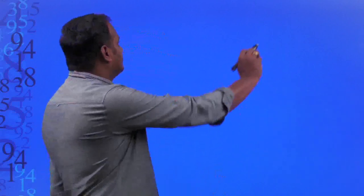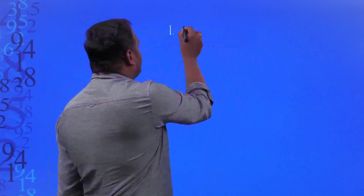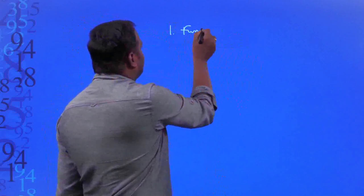Hello children, welcome back. We discussed about various number systems, different numbers, Euclid's division lemma, and some applications of Euclid's division lemma in the previous class. Now we will discuss the next level of this chapter, starting with the fundamental theorem of arithmetic.